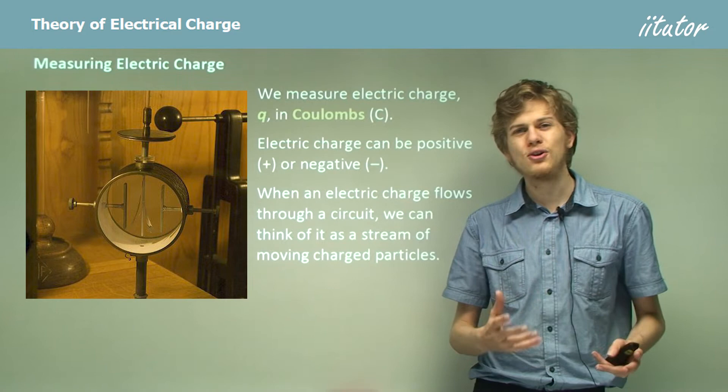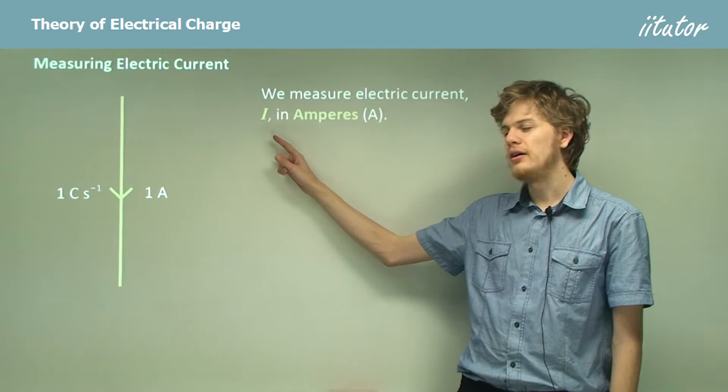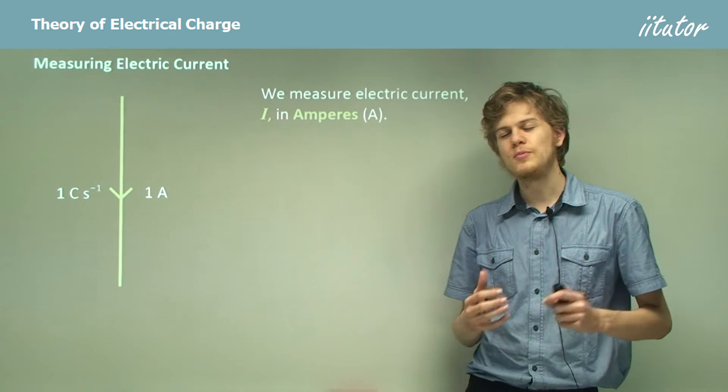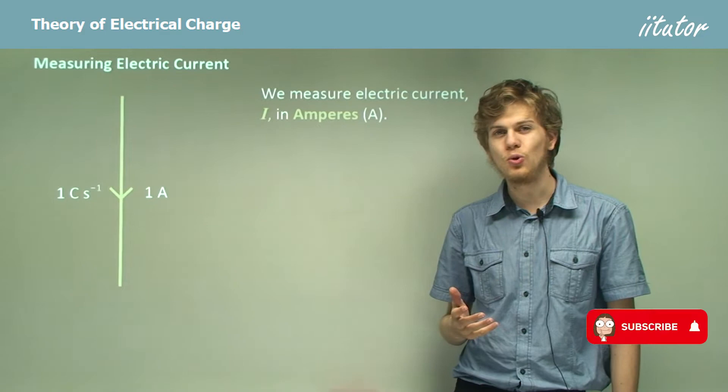We measure electric current, that is the movement of the charged particles, in amperes. Algebraically, we represent it with an uppercase I. So charge is lowercase q and it's measured in coulombs, and current, that's the flow of charge, is measured with uppercase I in amperes, or sometimes just amps for short.